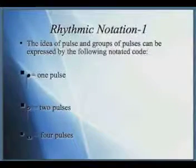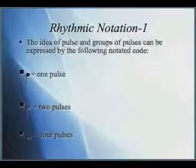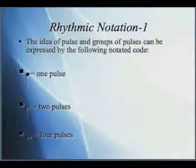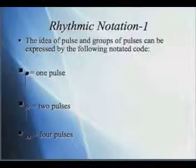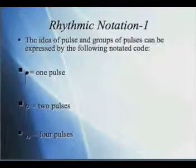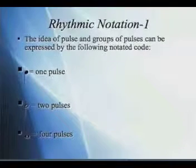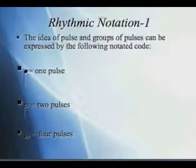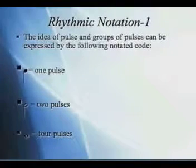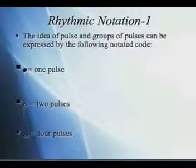Continuing with our lecture on musical time, we're getting into rhythmic notation now. This slide contains three symbols which we must learn to interpret: a black dot with a stem on it, a circle with a stem on it, and a big circle.